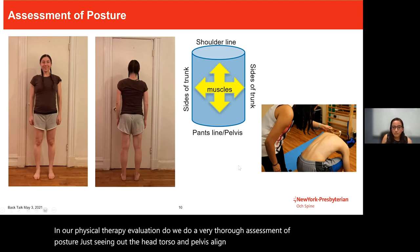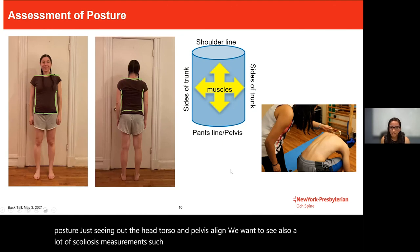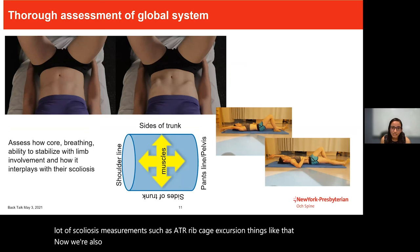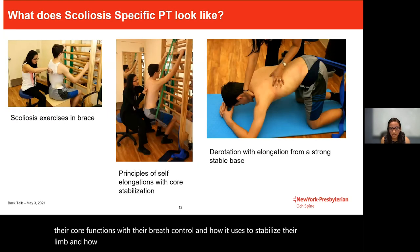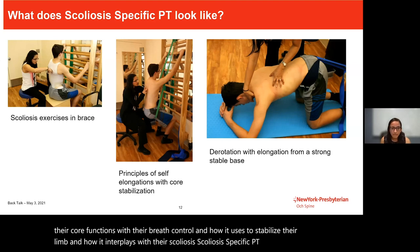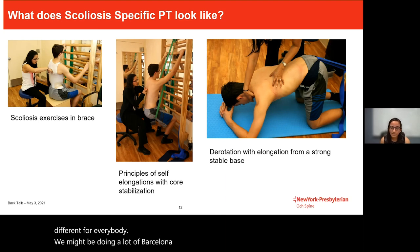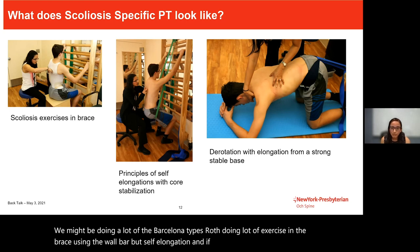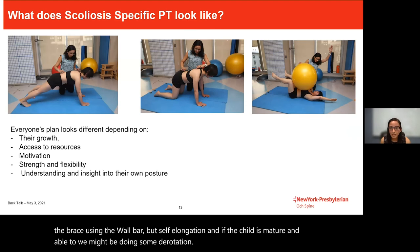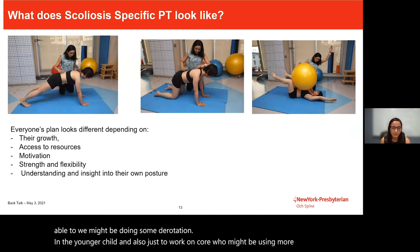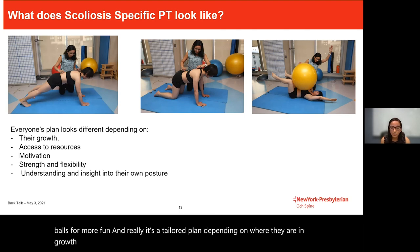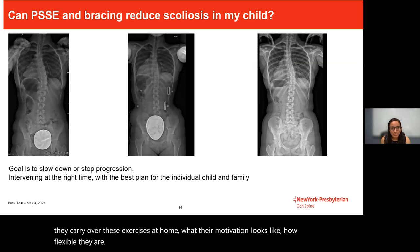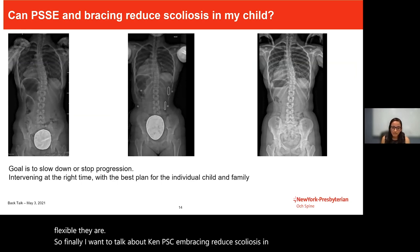In our physical therapy evaluation, we do a thorough assessment of posture — how the head, torso, and pelvis align — along with scoliosis measurements such as ATR and rib cage excursion. We also assess the entire system: how core functions with breath control, how it stabilizes the limb, and how it interplays with scoliosis. Scoliosis-specific PT looks very different for everybody — we might do Barcelona-type Schroth, exercise in the brace, use the wall bar with self-elongation, derotation for mature children, or geometric shapes in quadruped for core strength in younger children.